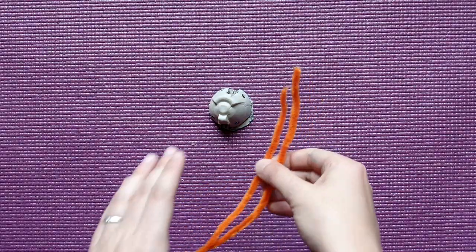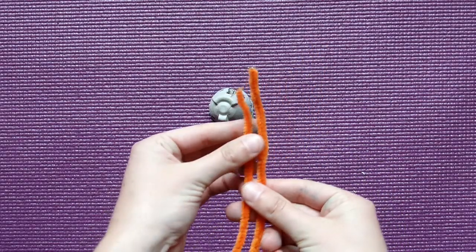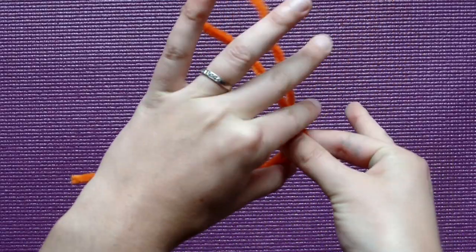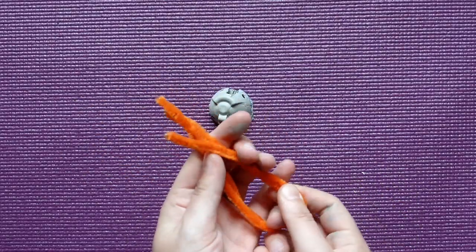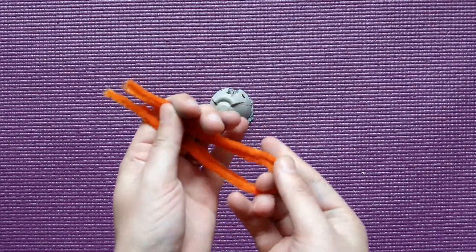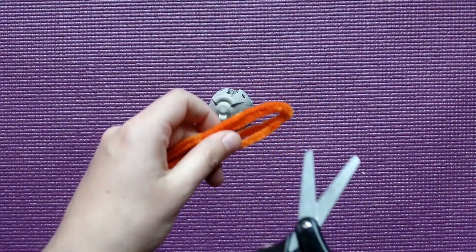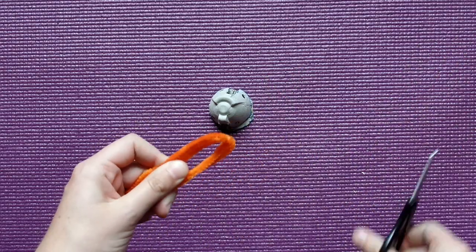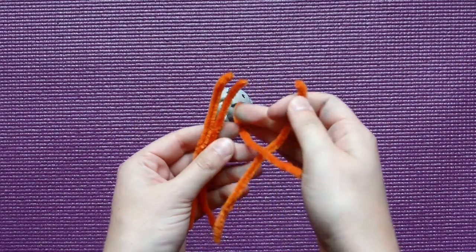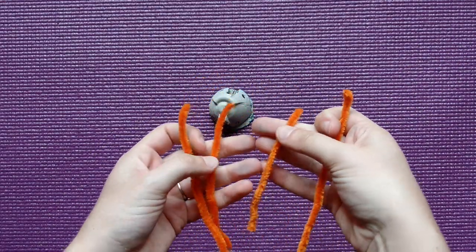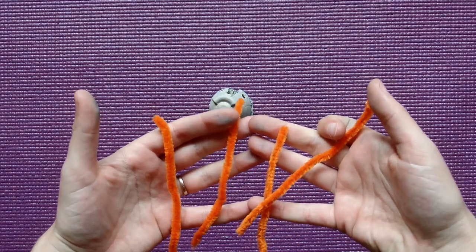Next we're going to take our two pipe cleaners. I'm going to line them right up and bend them in half. Make sure they're nice and even. And I'm just going to take my scissors and cut those right in half. So now I should have four shorter pipe cleaners and these are going to be my four legs of my turtle.